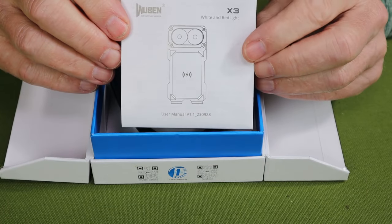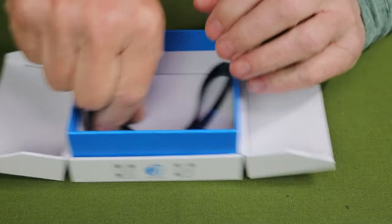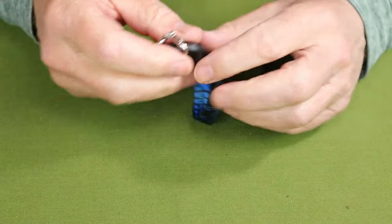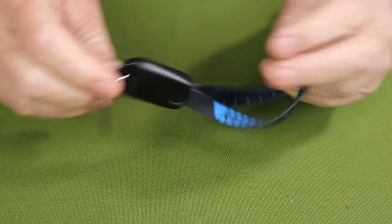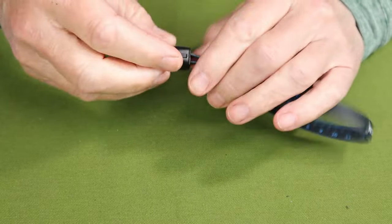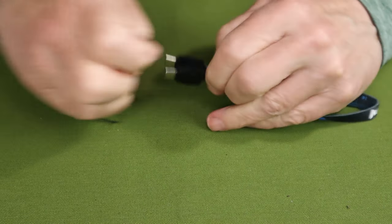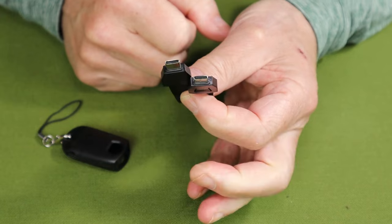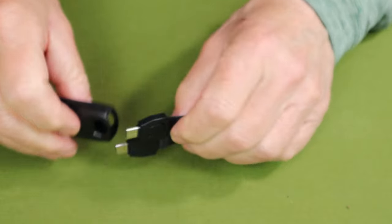Inside here, we have the manual and warranty information. One other thing inside is this. This does look like a lanyard, and it is. It is a lanyard that you can use and attach to the light, but it's also a USB Type-C fast charge cable. So you have the double-ended USB Type-C on either end. So you have your cable with you as well as a lanyard.